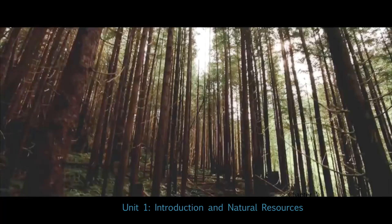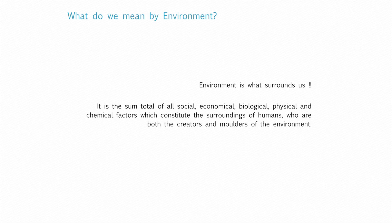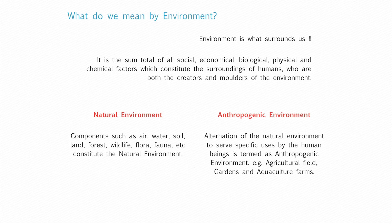Unit 1 Introduction and Natural Resources. What do you mean by environment? Environment is what surrounds us. There is a proper definition also: it is the sum total of all social, economical, biological, physical and chemical factors which constitute the surroundings of humans, who are both the creator and modeler of the environment. Environment is divided into two parts: natural environment and anthropogenic environment.